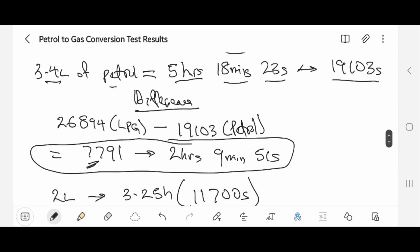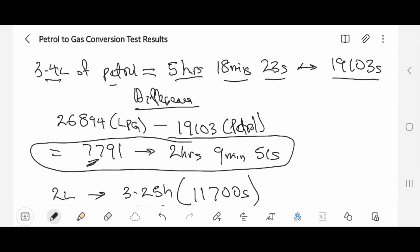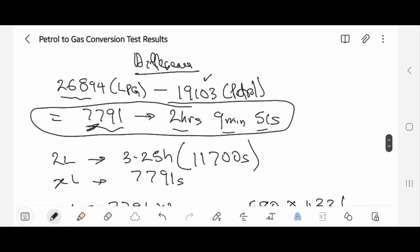The 3.4 liters gave me 5 hours 18 minutes 23 seconds. Converting to seconds, you get 19,103 seconds. To get the difference between the petrol and the gas, this is the average I got for gas, this is for petrol. I subtract the two, and you have 7,791 seconds, which translates to 2 hours 9 minutes 51 seconds. So that means if you use 3kg of gas compared to using 1,950 naira worth of petrol, this is how much gas will be saving you.